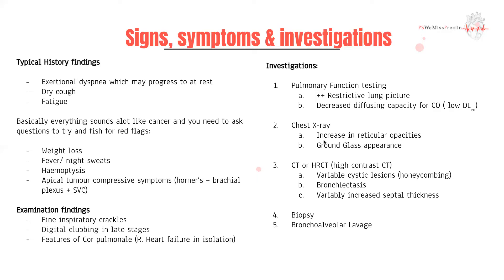It's also good to do a chest x-ray because you do see reticular opacities with interstitial lung disease, and also you can see a ground glass appearance. However, CT — or high-resolution CT in particular — is considered the gold standard. The three main signs you should know include the presence of variable cystic lesions or honeycombing, bronchiectasis which is thickening of the bronchioles, and increased septal thickness — because of the deposition of fibrous material, which also leads to poor diffusion capacity.